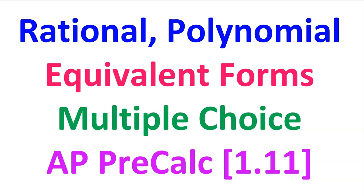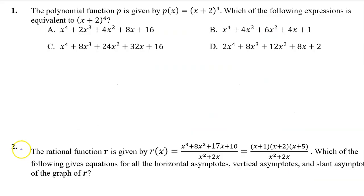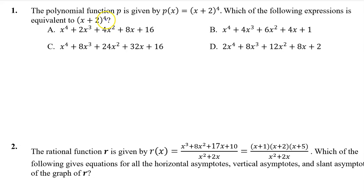If you appreciate this content, please give it a like. Number 1. The polynomial function p is given by p of x equals x plus 2 to the fourth power. Which of the following expressions is equivalent to x plus 2 to the fourth power?